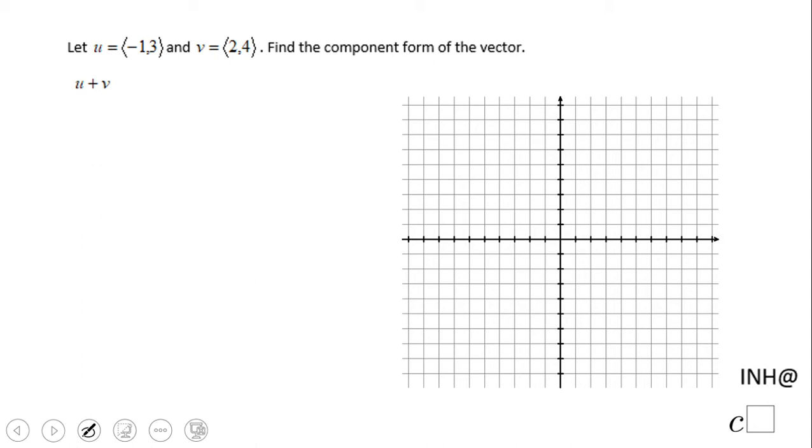The vector u is negative one and three, so go one left, three up. This is the vector u. Vector v is two and four - two right, four up. And that's it, this is the vector v.